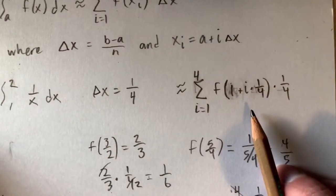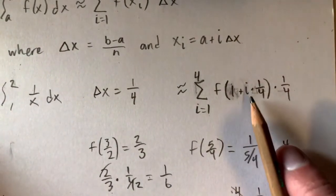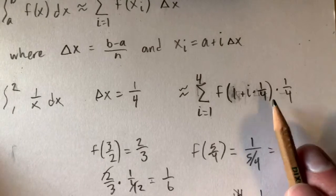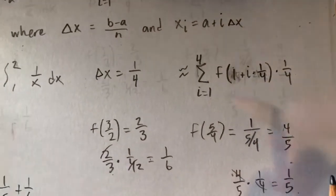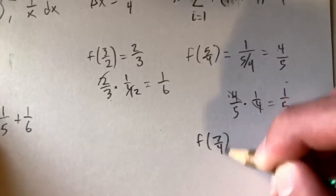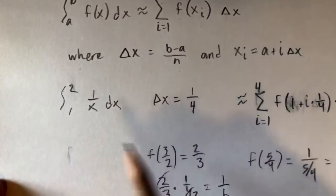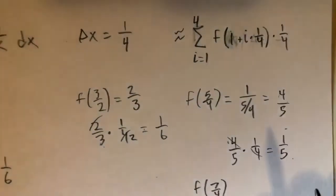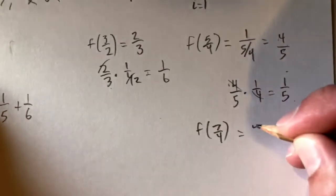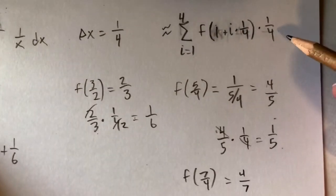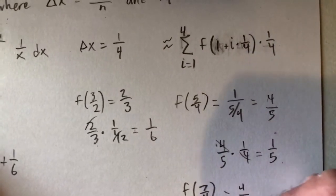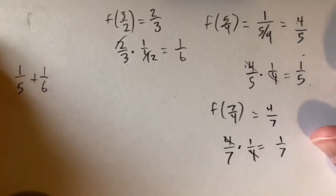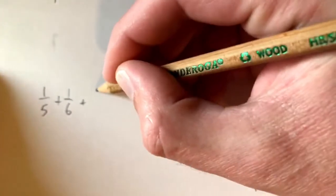For i equals 3, we get 3 times 1 fourth equals 3 fourths, and 1 plus 3 fourths equals 7 fourths. So f of 7 fourths equals 1 over 7 fourths, which is 4 sevenths. Multiplying 4 sevenths times 1 fourth, the 4s cancel and we get 1 over 7. Our third term is 1 seventh.